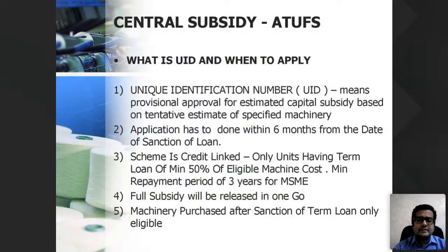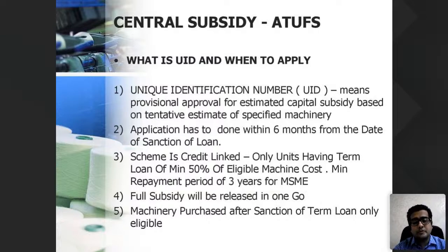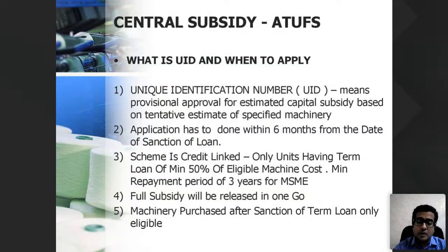To get this subsidy, once you have selected the industry stream, land, and bank for the loan, you must apply to the department and obtain a UID — a Unique Identification Number. This is essentially a provisional approval stating the estimated subsidy amount you will be eligible for after your machine is installed and jointly inspected. The entire process is online — you provide all KYC details and production capacity projections on the website.